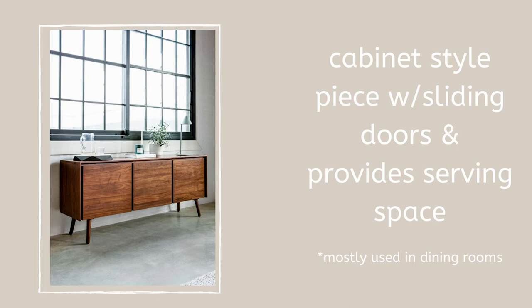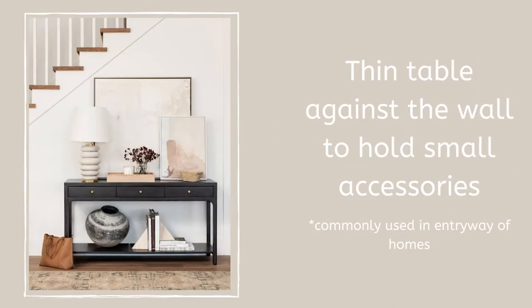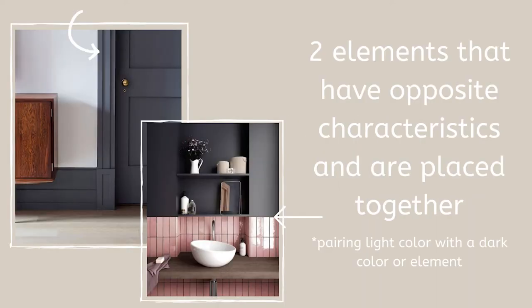A credenza is a cabinet-style piece with sliding doors and it provides serving space, so it's mostly used in dining rooms. If you have parties over, you can put food on top of the credenza, and you can also use it to store glassware. A console table is a thin table against the wall to hold accessories — it's mostly used in the entryway of a home so you can put your keys down or your bag. Contrast refers to two elements that have opposite characteristics placed together.